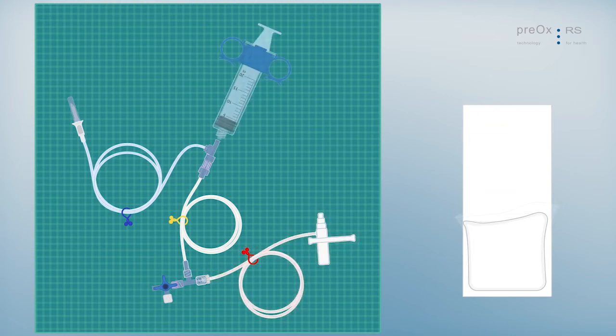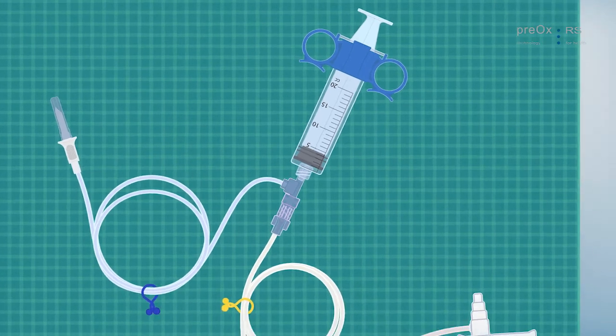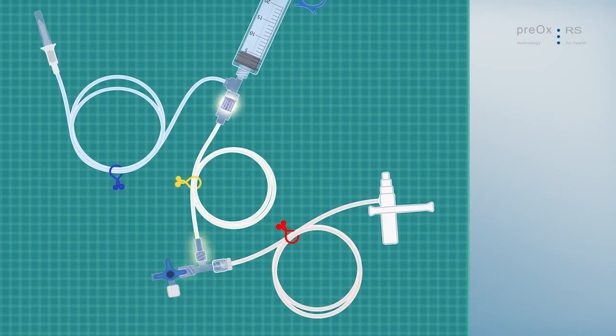Now connect the syringe to the double-check valve. Check the sealing of all luer lock connections.